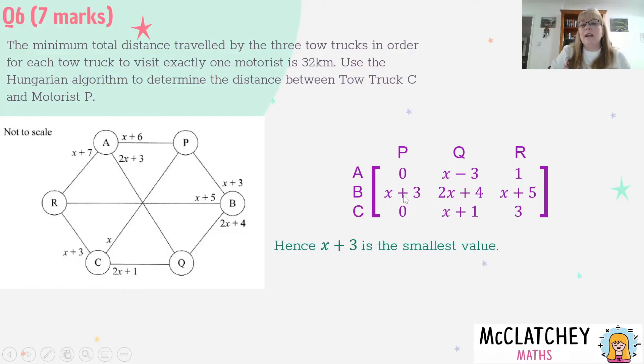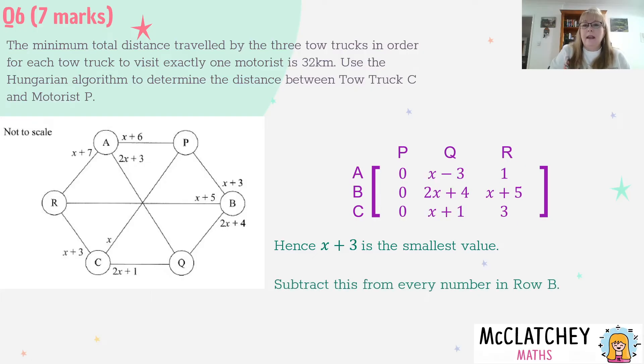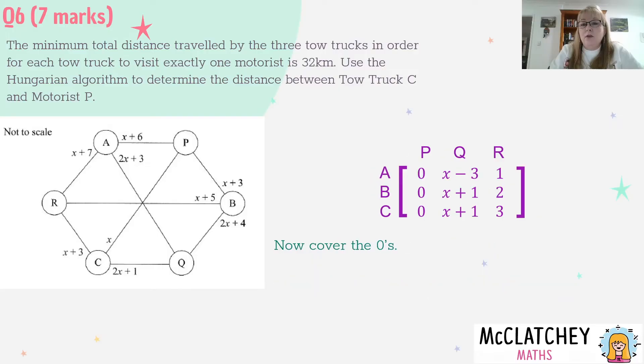We're going to take X plus 3 away from everything in that row. X plus 3 take away X plus 3 gives me 0. 2X plus 4 take away X plus 3 gives me X plus 1. X plus 5 take away X plus 3 is 2. Which means my row reduction is done. I get my second mark out of 7.